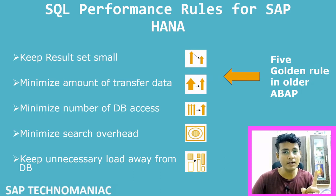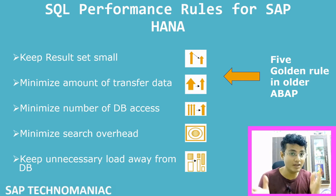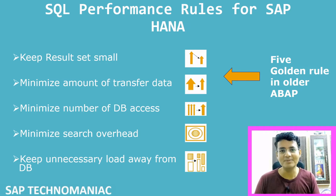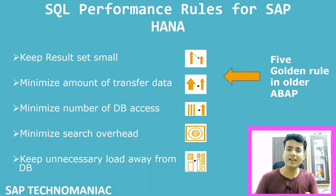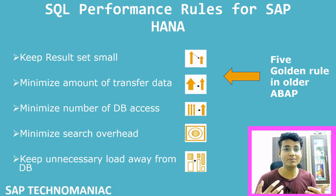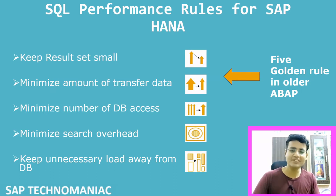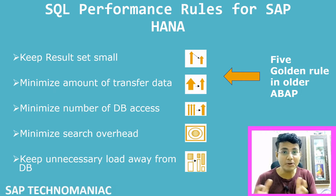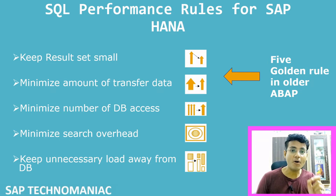We always say: hit one table one time in one program, unless it is truly required to hit multiple times. For example, with the VBFA table in SD — which is used to get preceding and succeeding documents — we sometimes have to hit it multiple times. That is a necessity, so we have to accept it in such cases.